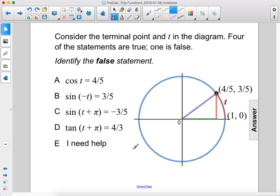Consider the terminal point and t in the diagram. Four of the statements are true, one is false. Identify the false statement.